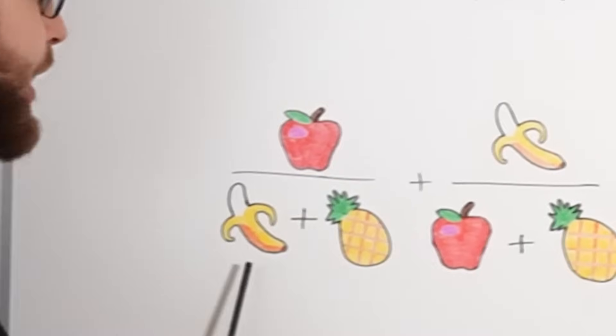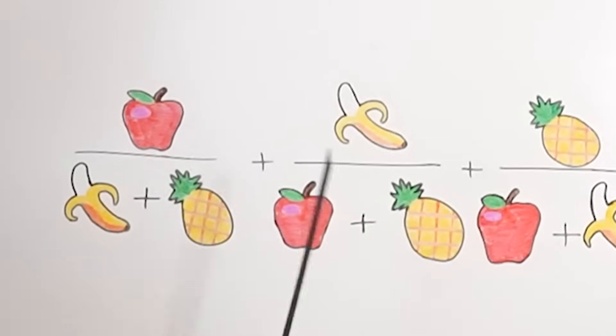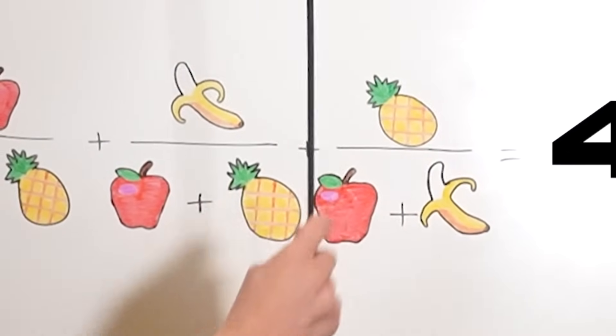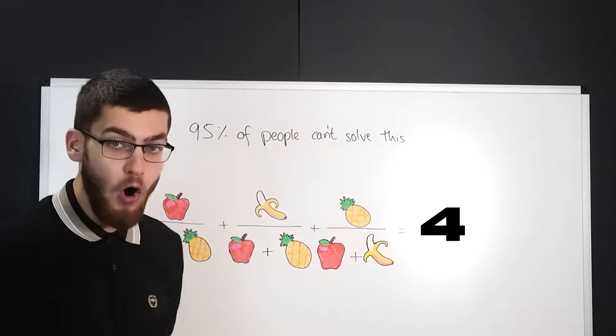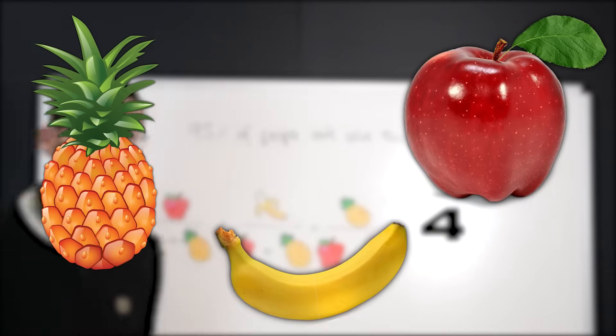The problem is apple over banana plus pineapple, plus banana over apple plus pineapple, plus pineapple over apple plus banana equals 4, where pineapple, apple, and banana are positive integers.